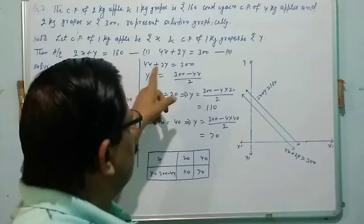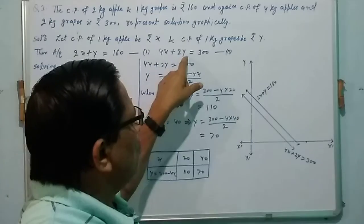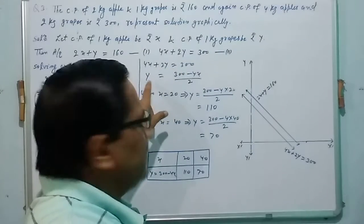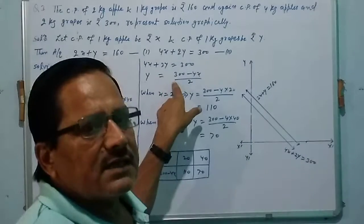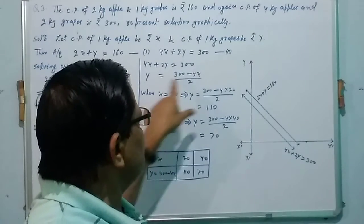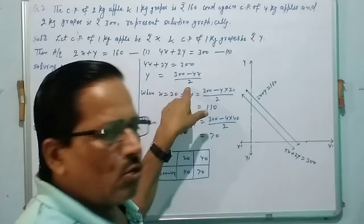Now second equation is 4x plus 2y equal to 300. Again we transpose the term and bring it into the function equation, y equal to 300 minus 4x by 2. We put x equal to 20, we get y equal to 110.